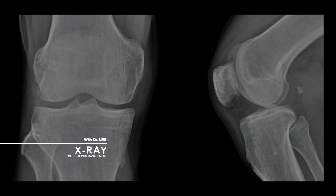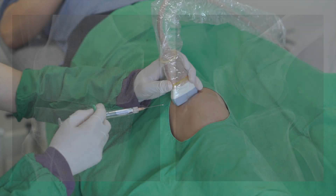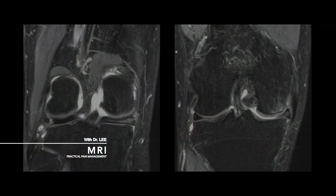With this X-ray image, there is an exostosis in the medial tibial condyle and mild degenerative change of medial and lateral joint margin.